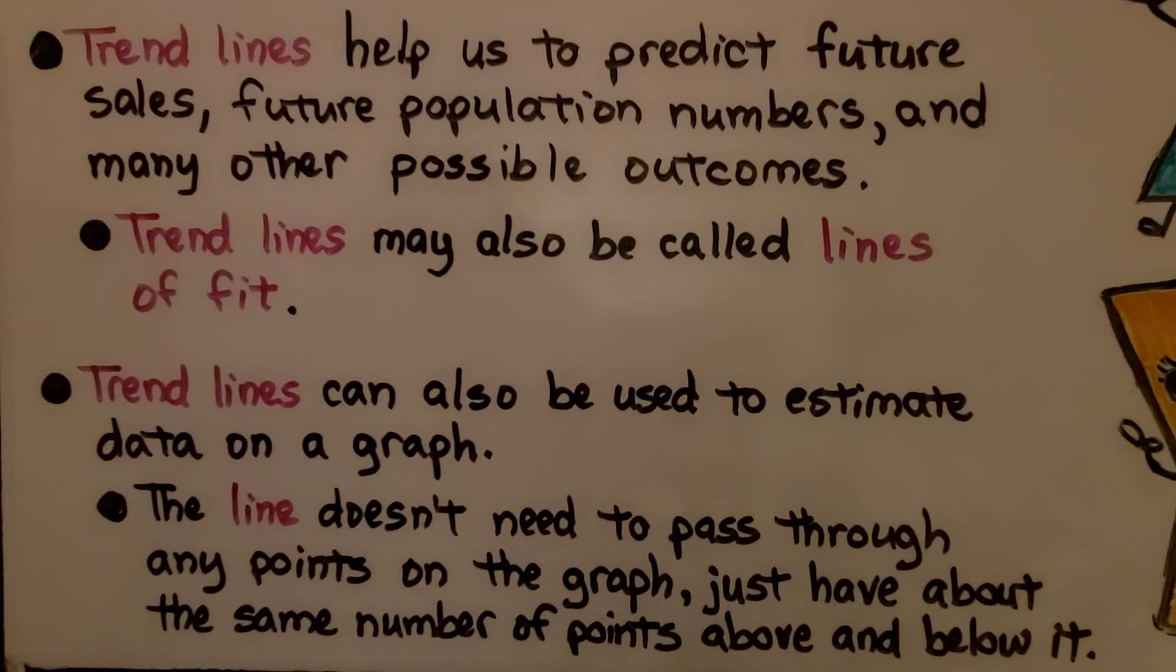Trendlines help us predict future sales, future population numbers, and many other possible outcomes. Trendlines may also be called lines of fit. Trendlines can be used to estimate data on a graph, and the line doesn't need to pass through any points on the graph. Just have about the same number of points above and below it.